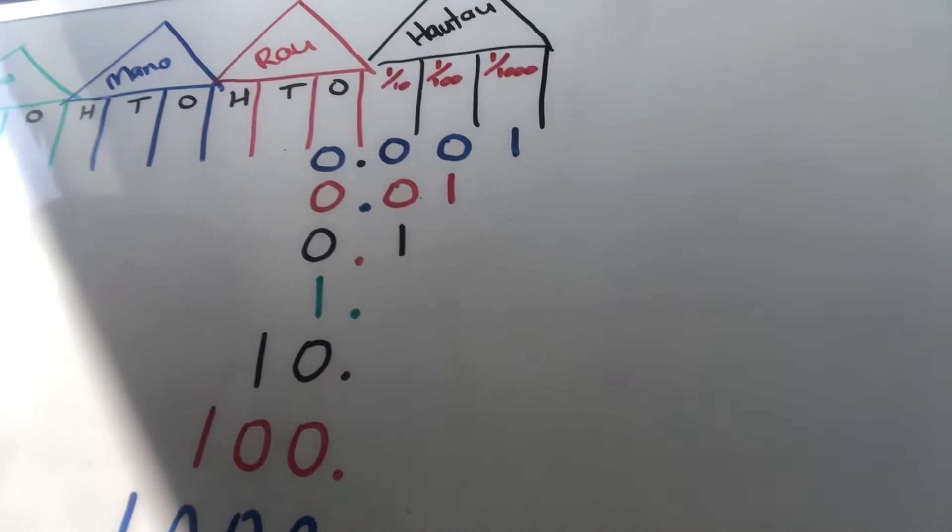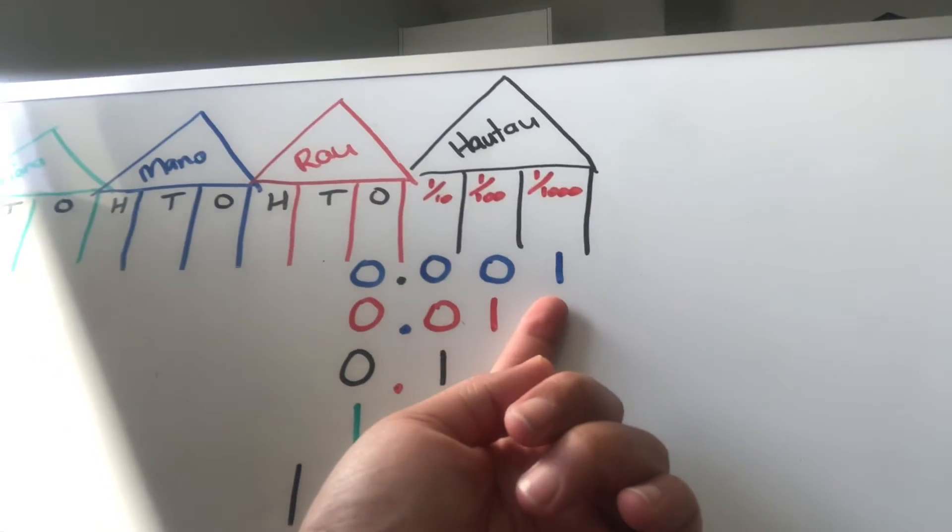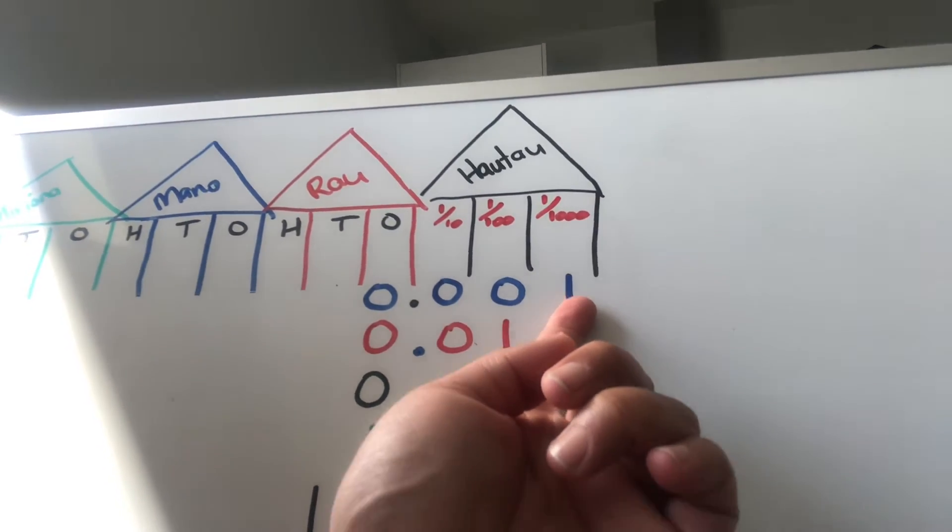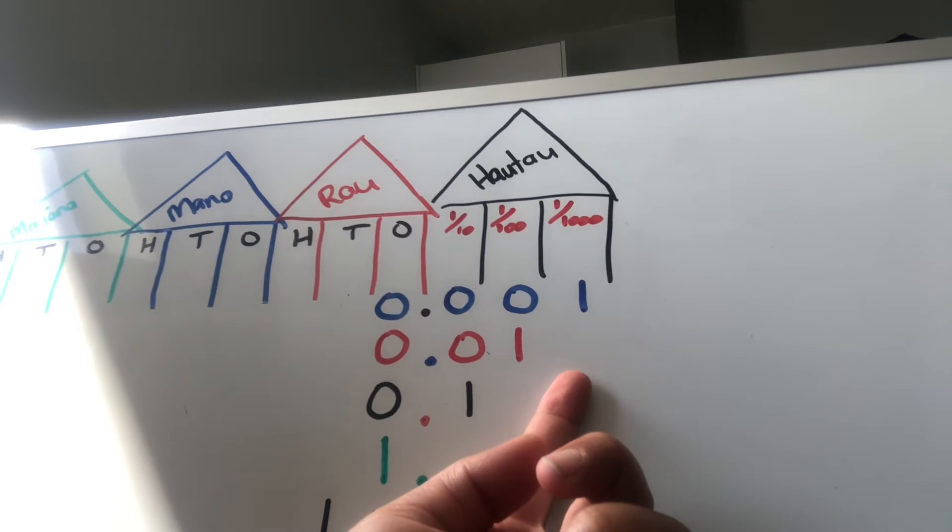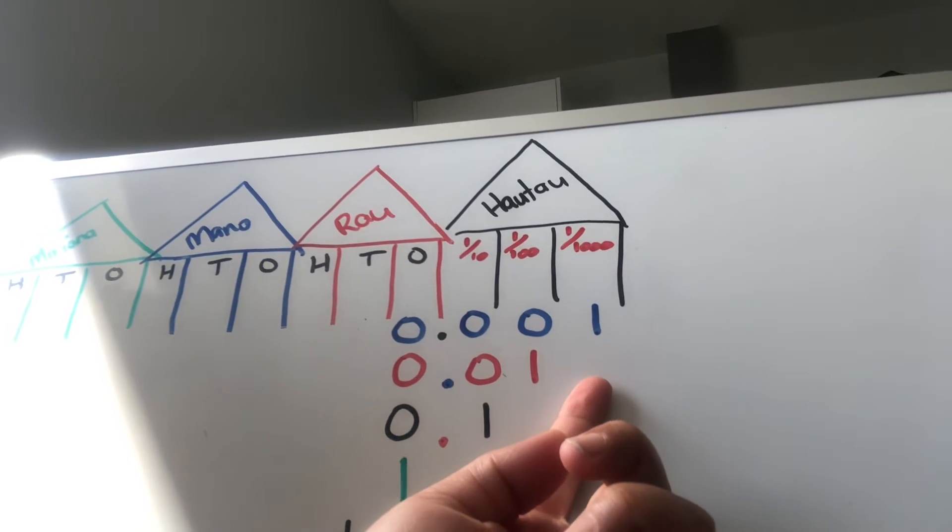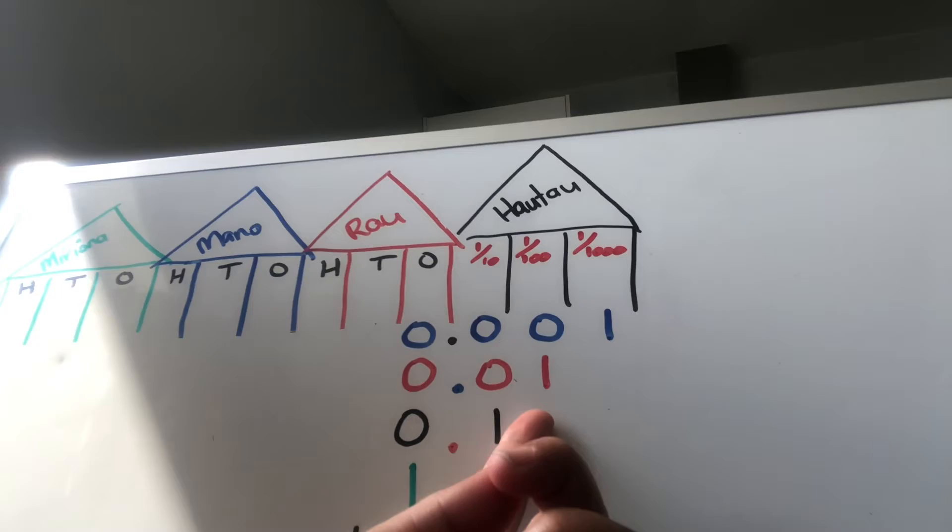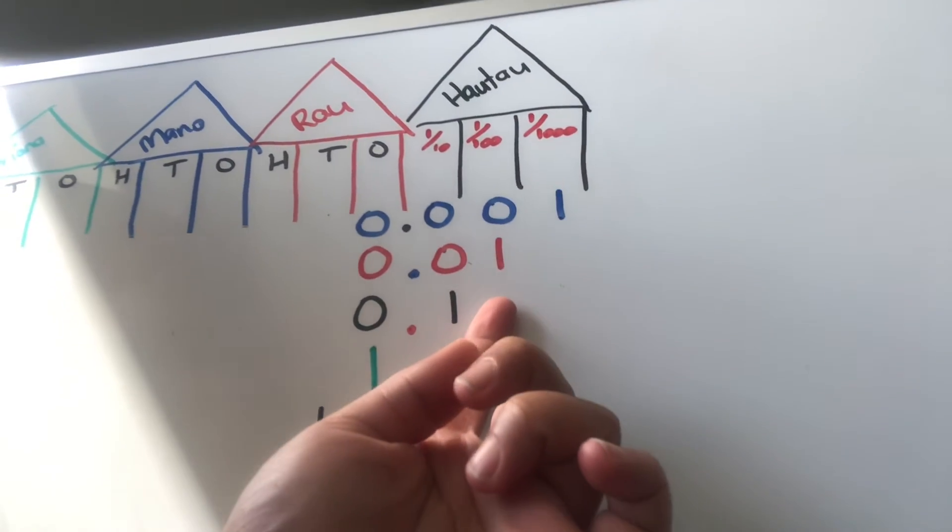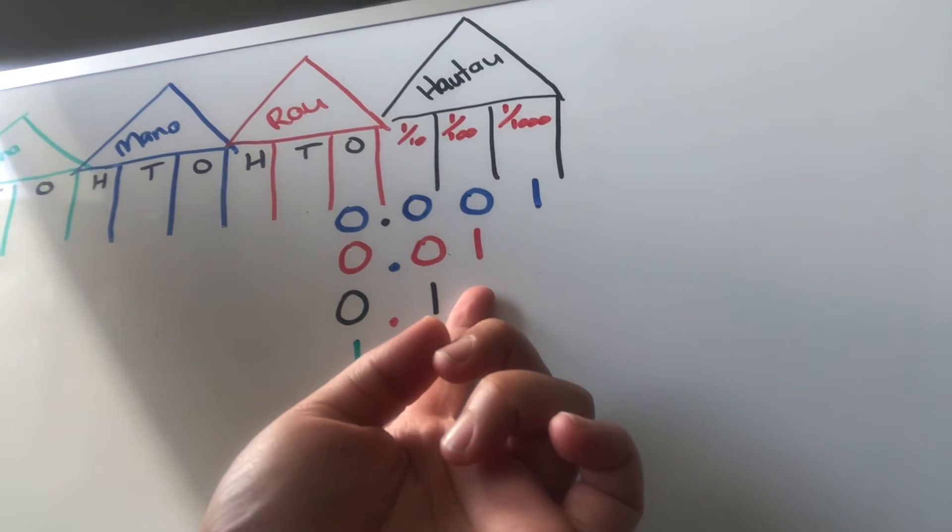Now last week we talked about 0.001 being the thousandth, and of course when you multiply that by 10 you get to have a hundredth.